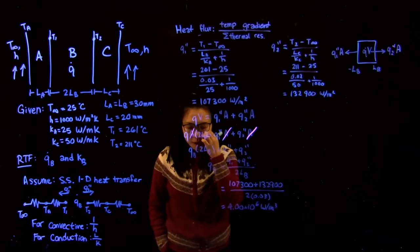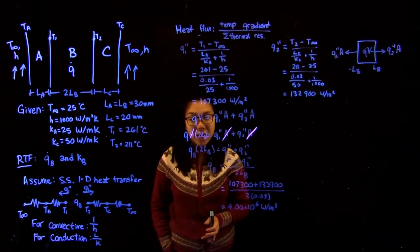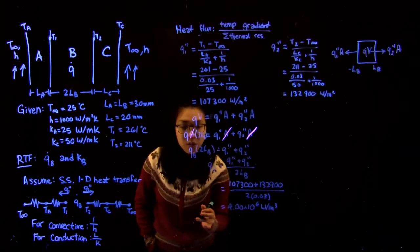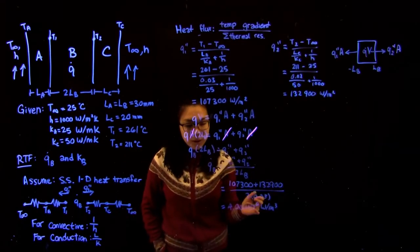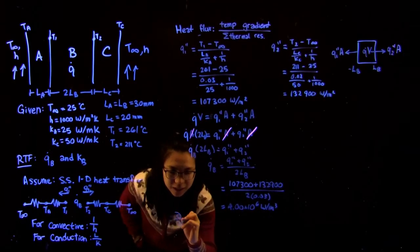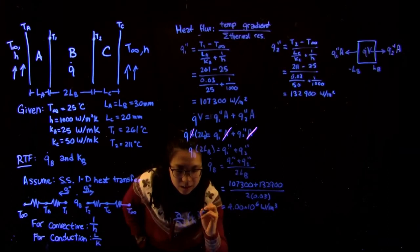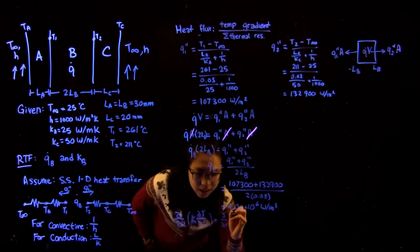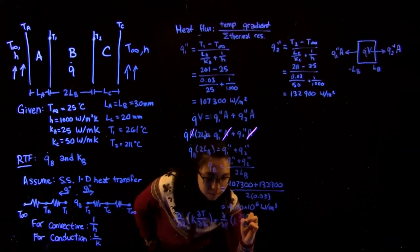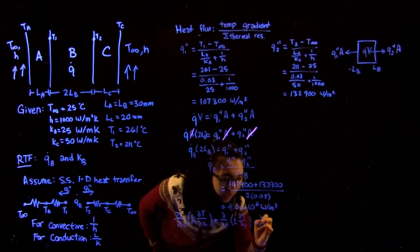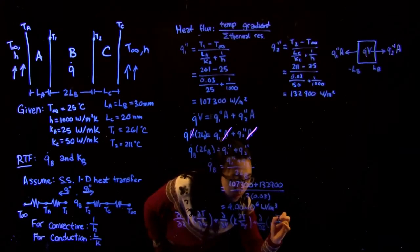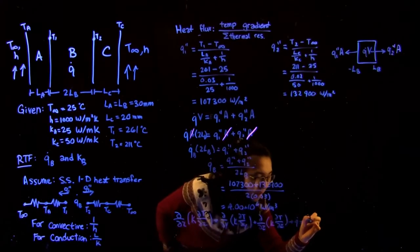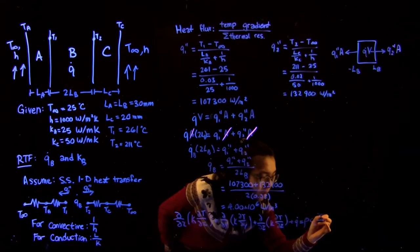The next part of the question asks us to find the thermal conductivity KB. In order to do that, you want to use the heat diffusion equation. In long form, the one that you have on your equation sheet, it looks like this, where you have di by di x times the constant k di t by di x plus di by di y plus the same for z plus heat generation is equal to rho cp di t by di t.